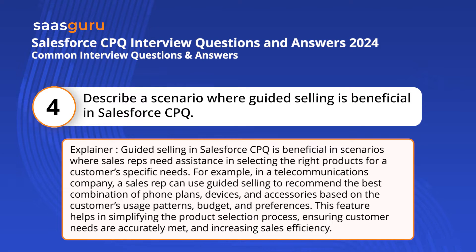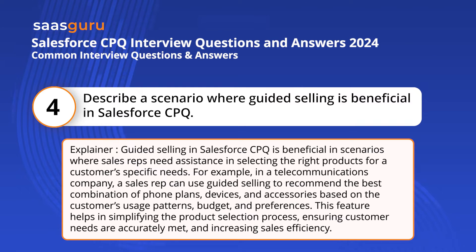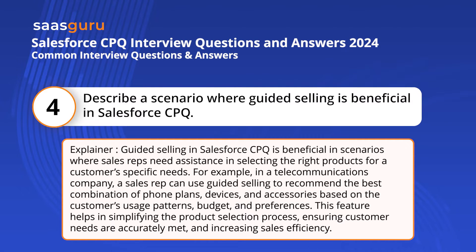For example, in a telecommunications company, a sales rep can use guided selling to recommend the best combination of phone plans, devices, and accessories based on the customer's usage patterns, budget, and preferences. This feature helps in simplifying the product selection process, ensuring customer needs are accurately met, and increasing sales efficiency.